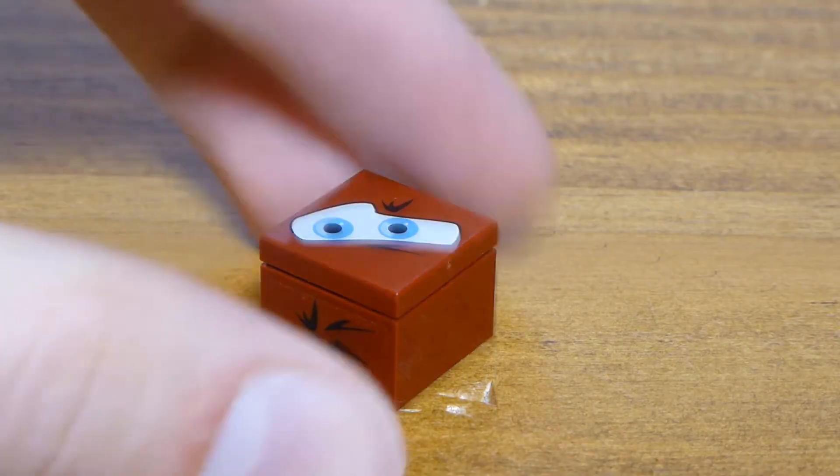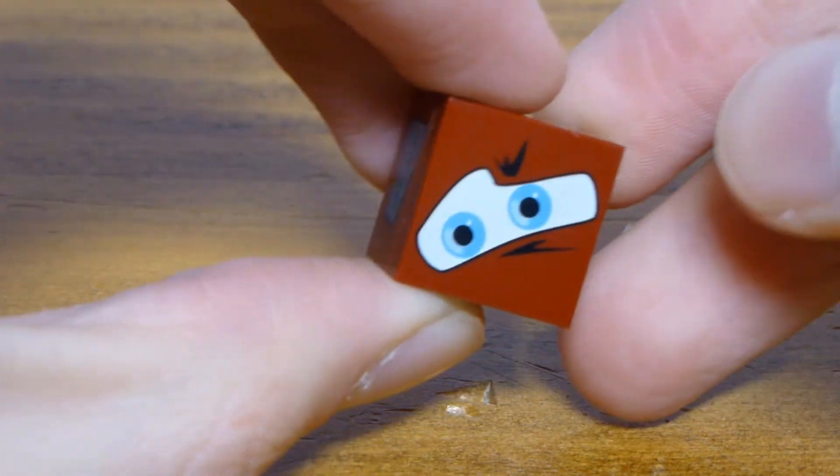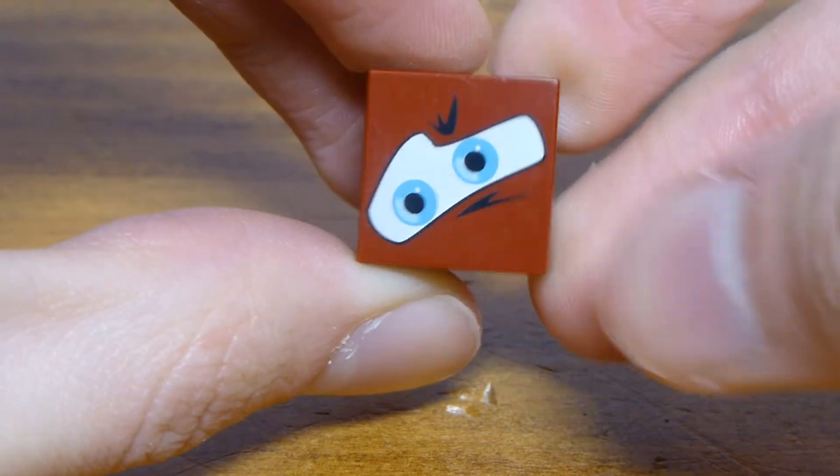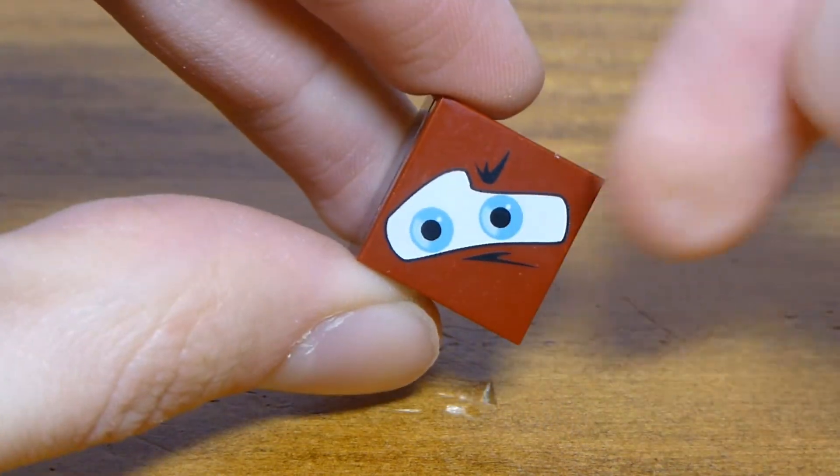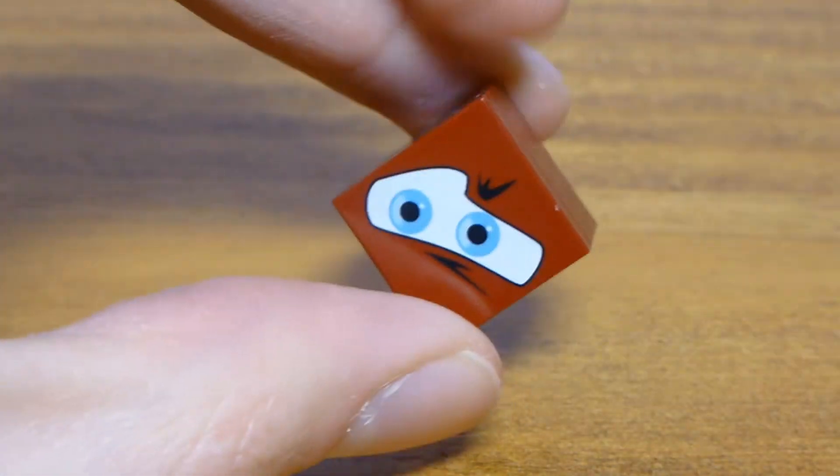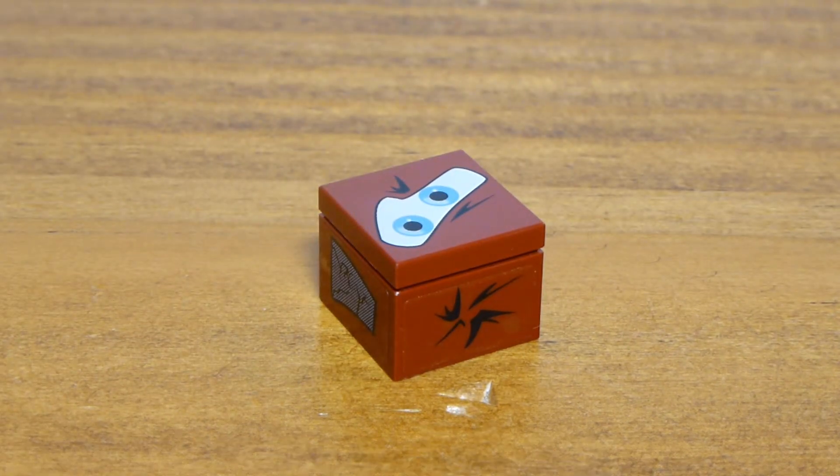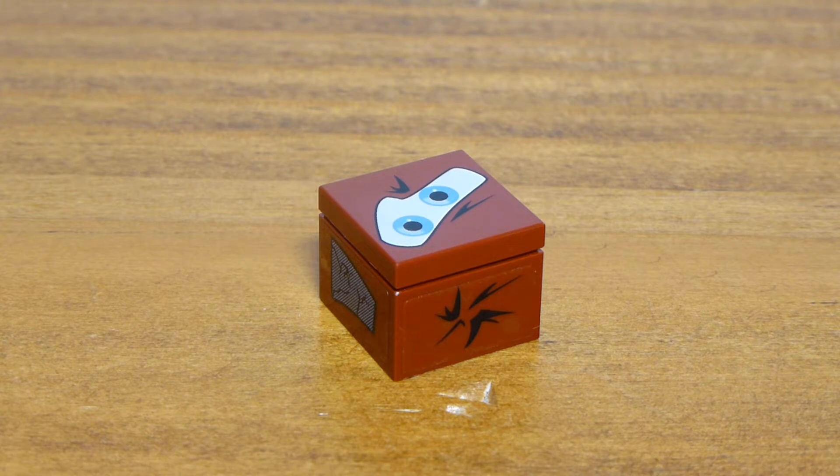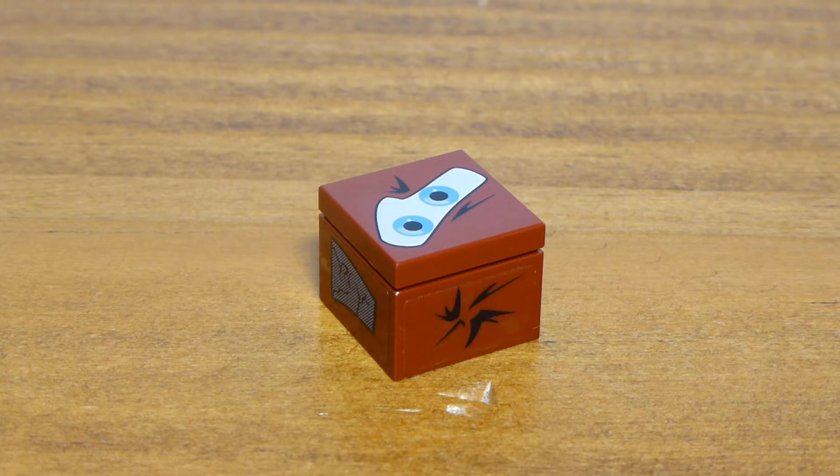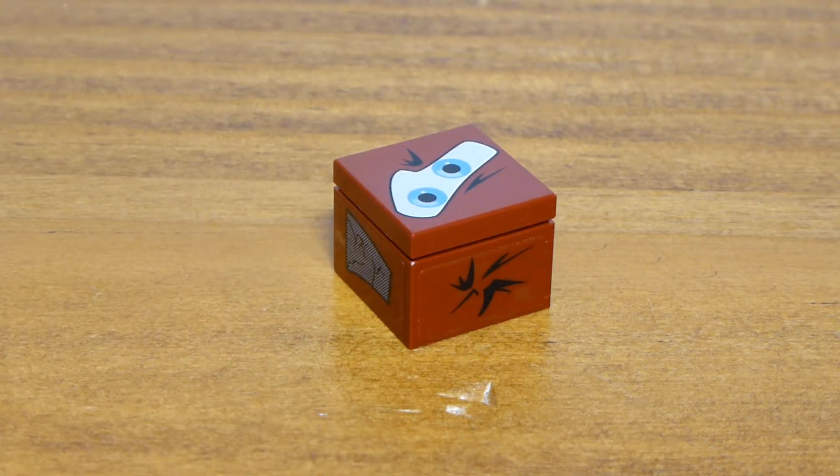Before we see it though, we have to take a look at Leland Turbo. I'm really glad they included this. It's such an unimportant thing, but it's just cool. It's got this printed 2x2 tile as well as a sticker on two sides of this brick. He's the spy that had been on the oil rig, and the bad guys found out about him and had him squished into a box, a cube.